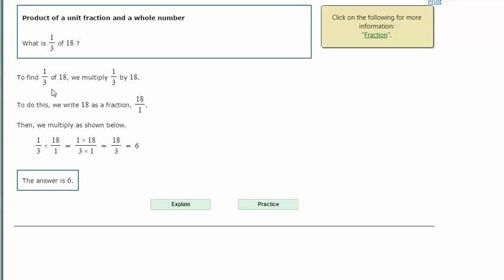To find 1/3 of 18, we multiply 1/3 by 18. To do this, we write 18 as a fraction, 18 over 1. Then we multiply as shown below. 1/3 times 18/1. 1 times 18 is 18. 3 times 1 is 3.